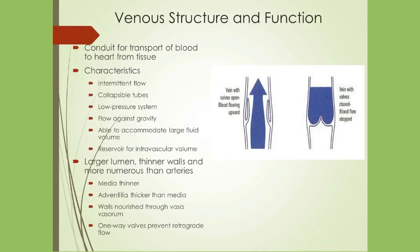The venous system serves as a means to return unoxygenated blood from the tissues to the heart and lungs to be re-oxygenated and distributed again to the tissues via the arterial system. The venous system flow is intermittent and moves forward with each beat of the heart. The flow of blood against gravity is assisted by valves on the interior surface of the vessels in the lower extremity. The valves open and close with the heartbeat to prevent flow of blood from moving backwards.